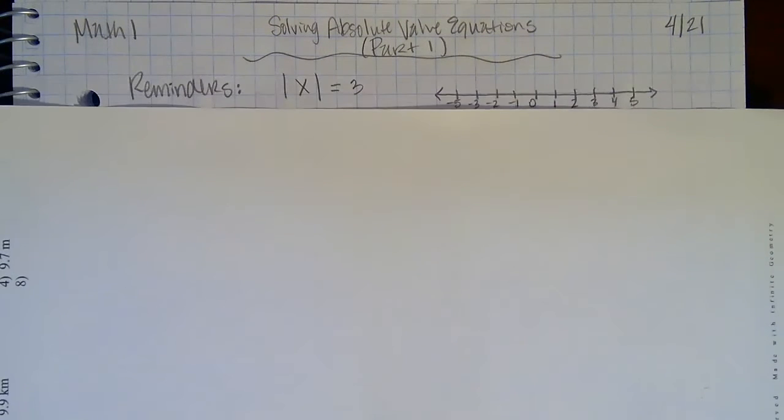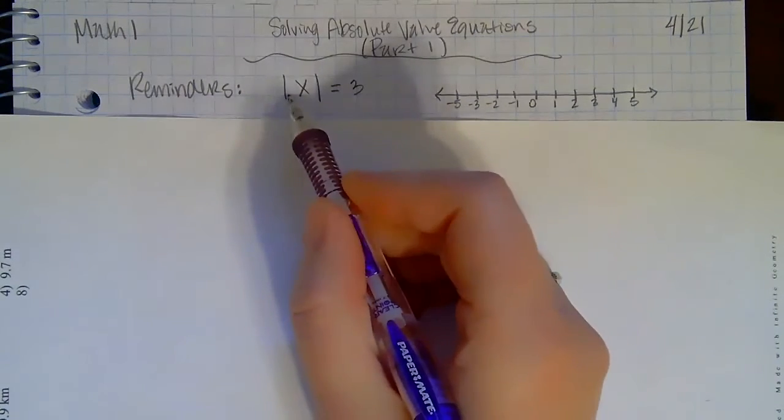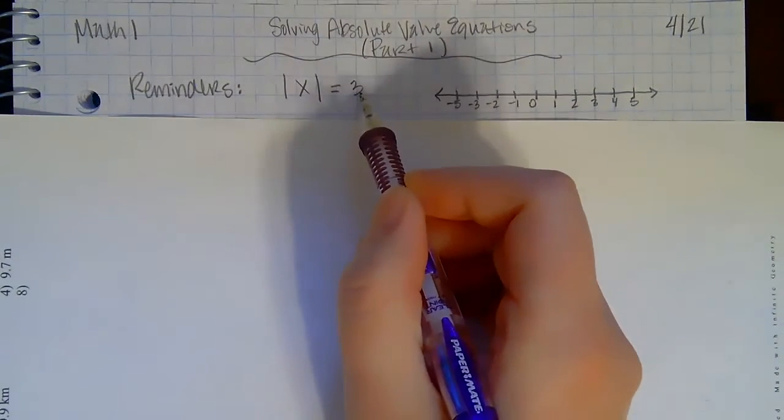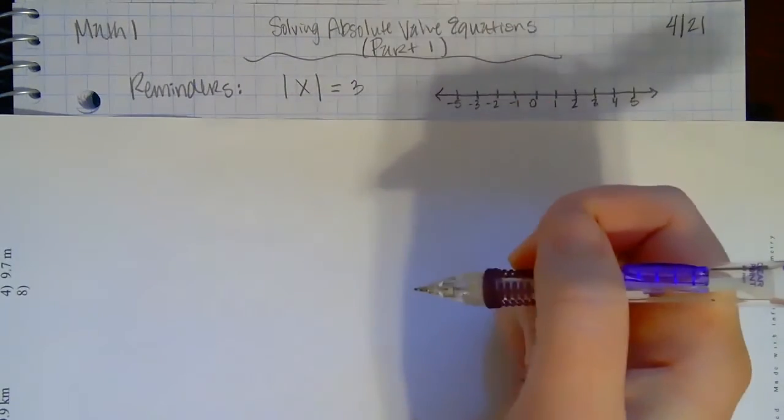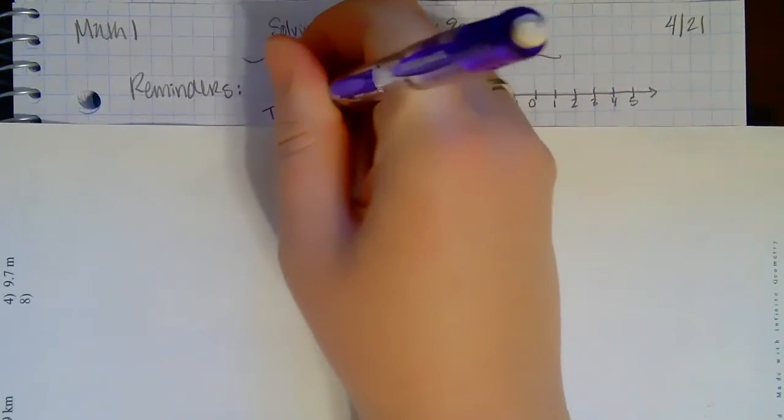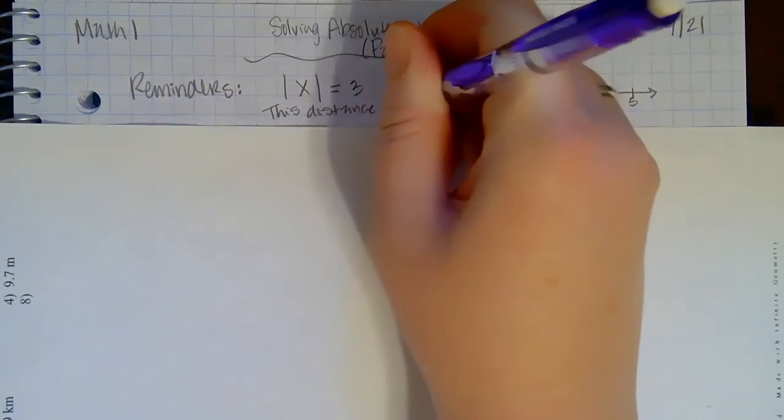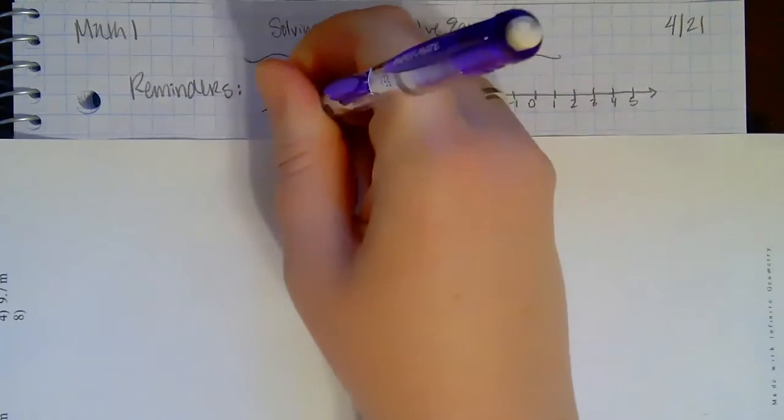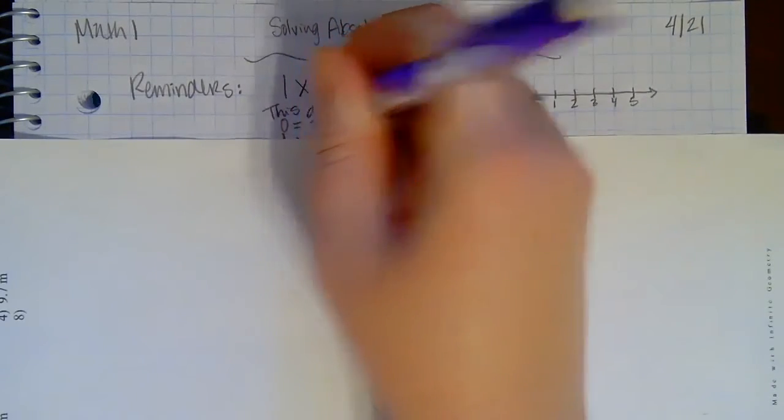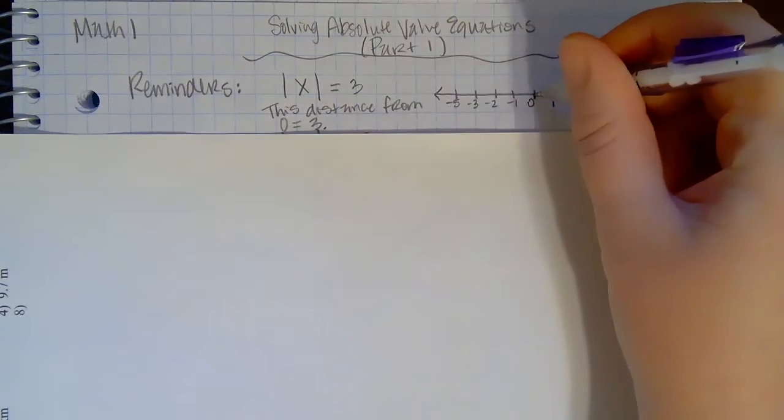Okay, so just some reminders first of all. If I have something like absolute value of x equals 3, they're telling me that the distance from 0 is 3. So then I have to look and see what numbers those could be. So from 0, I'm going to go to 3, right?